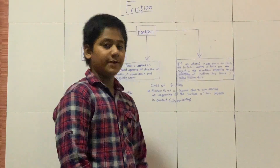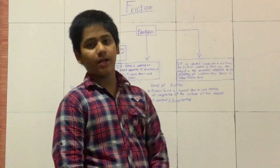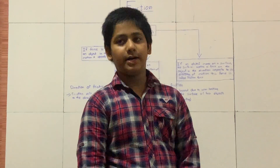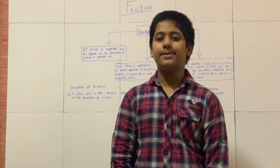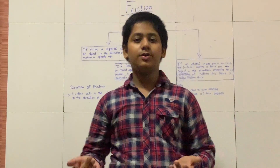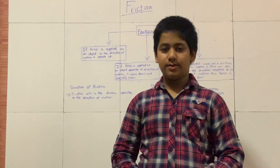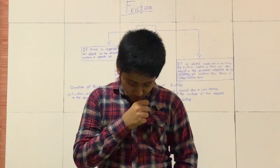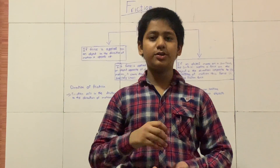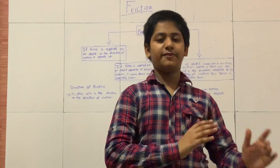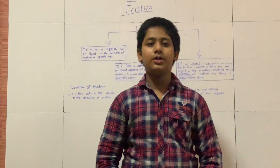Before starting, let me give you a small example. You know carrom board — when you play carrom board and you hit a coin, it goes and then it stops. That stopping happens because of friction. Now let us start our chapter.